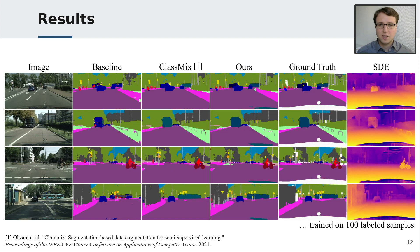In example predictions, it can be seen that our method better distinguishes difficult classes such as truck, train and bus and segments finer structures at depth discontinuities, as can be seen for this rider. Thank you for watching this video.